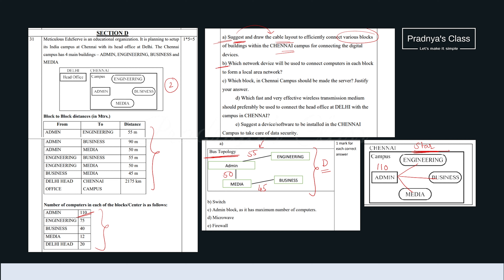Moving to the next question: which network device will be used to connect computers in each block to form a local area network? There are two options — hub and switch. But switch is a smart hub, that's why we will be using switch. The next question asks which block in Chennai campus would be the server. Since the number of computers is more in the admin block, the admin block is the server.